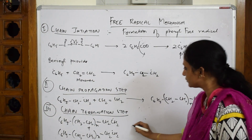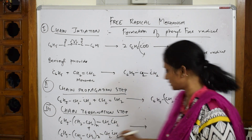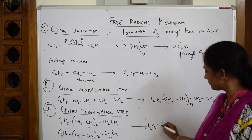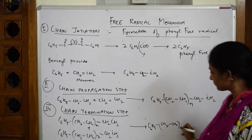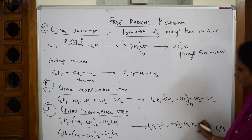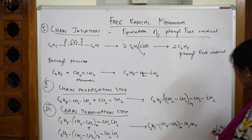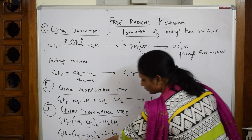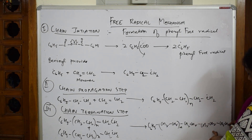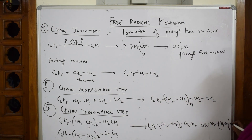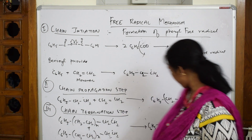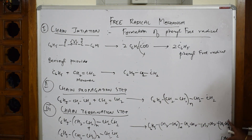These two free radicals join together - one terminal C6H5 on one side and one terminal C6H5 on the other side, with the -CH2- repeating units in between joining to form C6H5-(CH2-CH2)n-C6H5. Counting the carbons: 1 through 10 on each side - the chain is terminated.